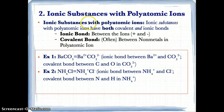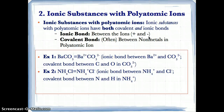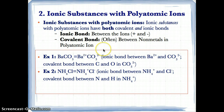Ionic substances with polyatomic ions have both covalent and ionic bonds. You'll find an ionic bond between the ions — positive and negative. Whatever the positive ion is and whatever the negative ion is, they'll be attracted to each other and bond because of their charges. Opposites attract, so the positive and negative attract, and that forms the ionic bond. Covalent bonds, on the other hand, are often between the non-metals within the polyatomic ion — for example, N and H together, or C and O together. Those non-metals form covalent bonds within the polyatomic ion itself.